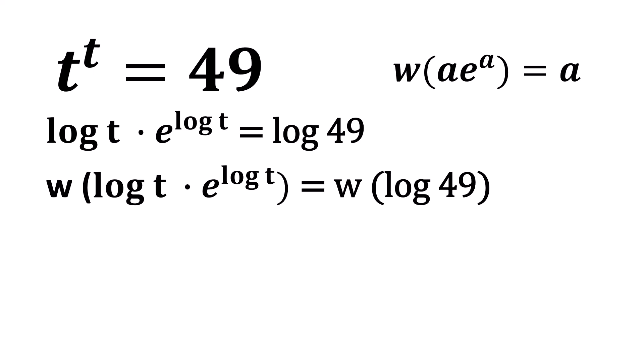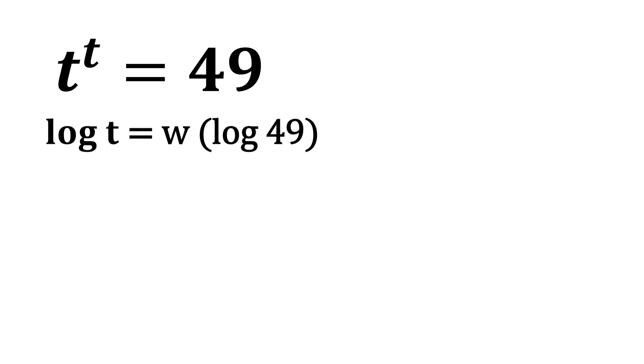Now, applying the identity we discussed earlier, we can write log t is equal to W of log 49. So, the value of t is equal to e to the power W of log 49.